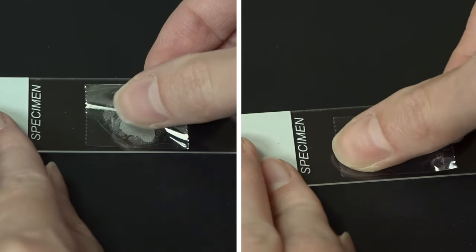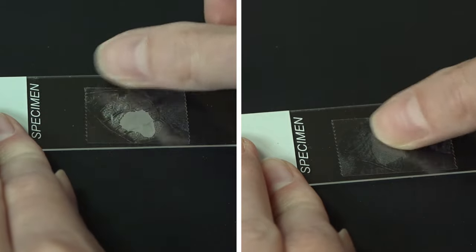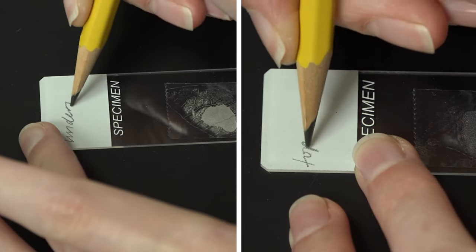Then I simply stick it on a microscope slide, label it, and we're ready to observe some stomata.